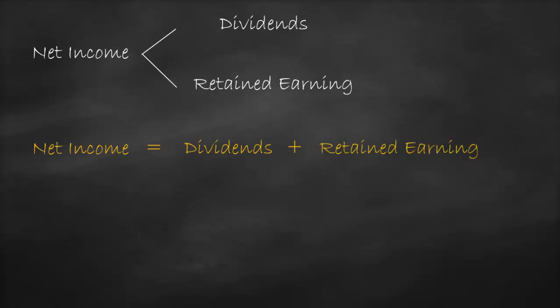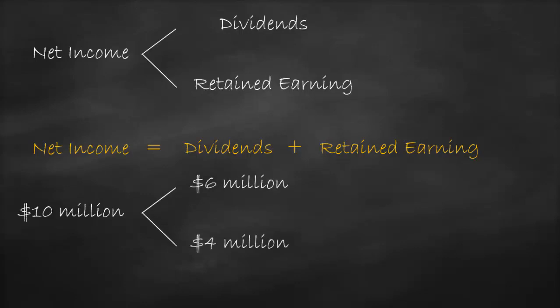Let's try and have a look at a numerical example to see how this works. Let's assume a company has net income of $10 million, which is divided as dividends of $6 million and retained earnings of $4 million.